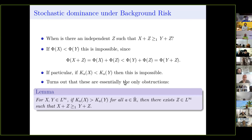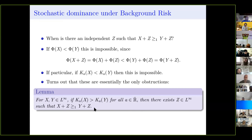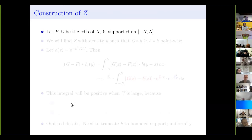The interesting thing is that these are essentially the only obstructions. Here's the main technical lemma: if x and y are in L-infinity and k_a(x) is strictly bigger than k_a(y) for every a — meaning the moment generating functions are ranked, and the expectations, minimum, and maximum are all ranked — then there exists a z so that x+z stochastically dominates y+z.